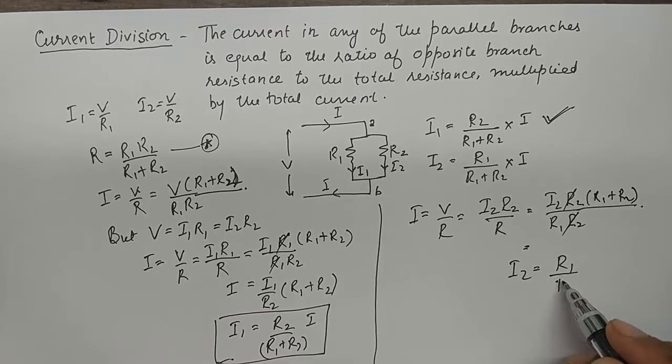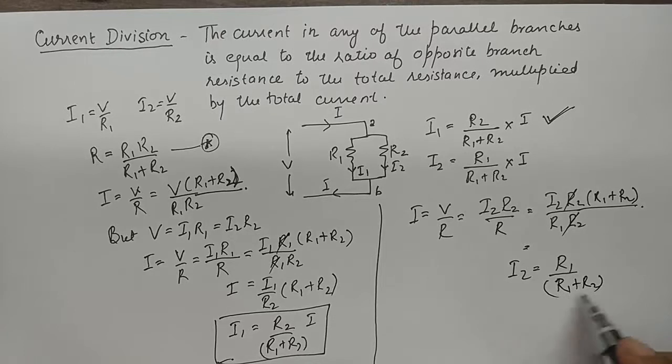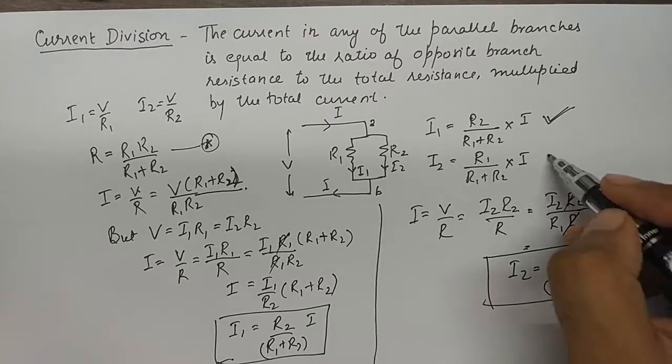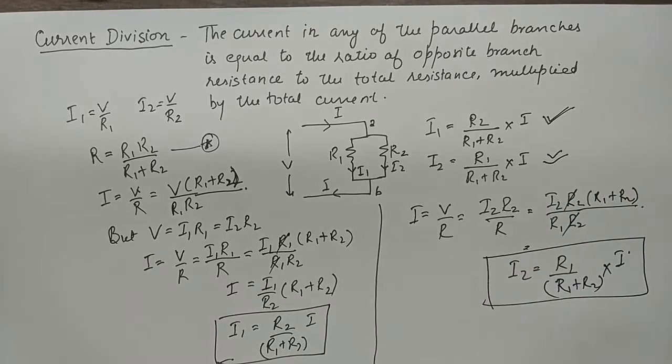This gives us R1 upon R1 plus R2 into total current I, which is the second equation of the current division rule.